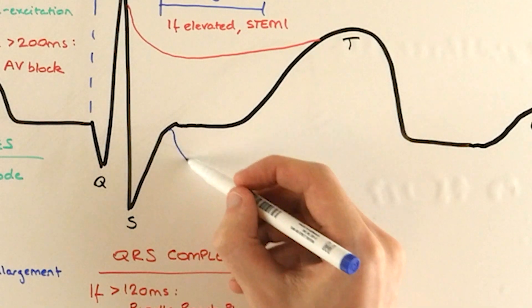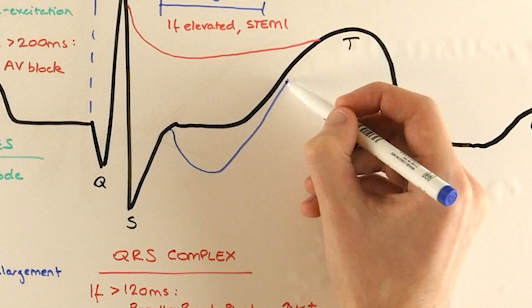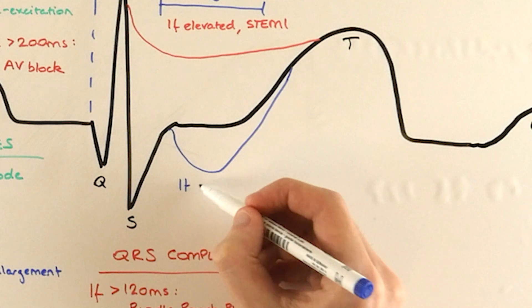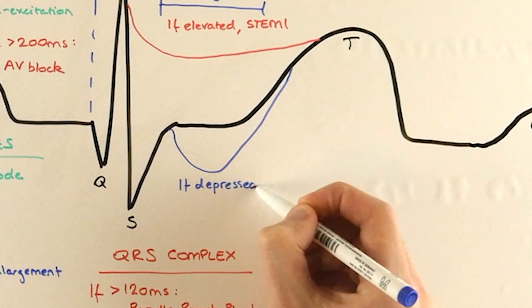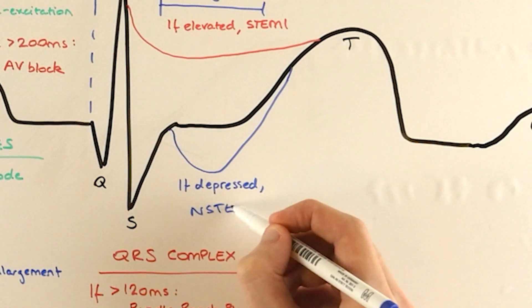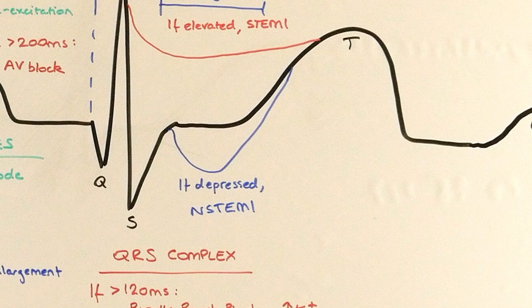Equally, if it's depressed relative to the baseline, this is suggestive of tissue ischemia, lack of oxygen, and we call this non-ST-elevated myocardial infarction, or NSTEMI.